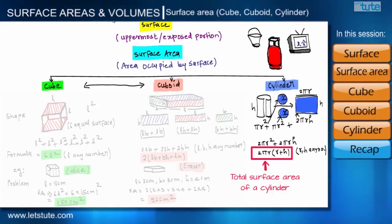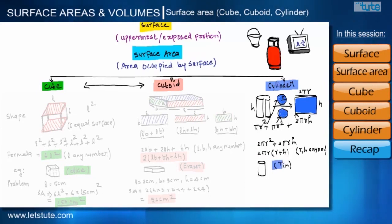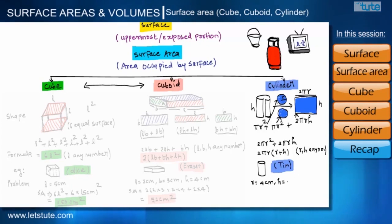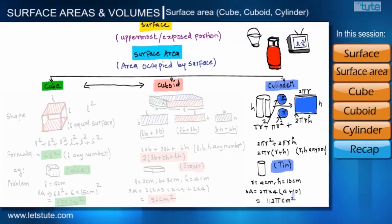A coating tin is the best example of a cylinder. Let us find the total surface area of a tin having radius R = 4 cm and height 10 cm. Using the formula 2πR(R + H), the total surface area of this tin is 112π cm².